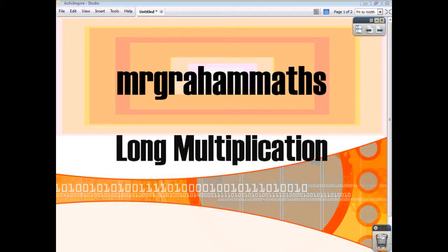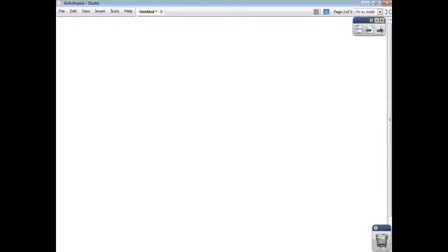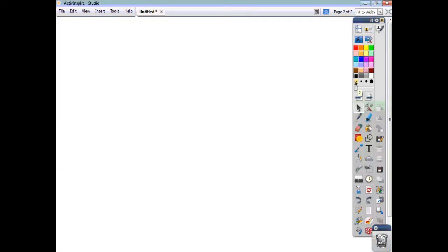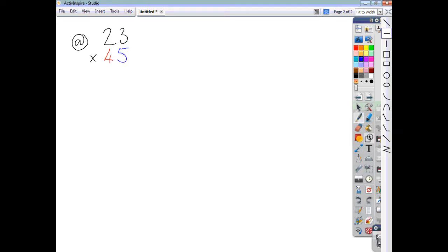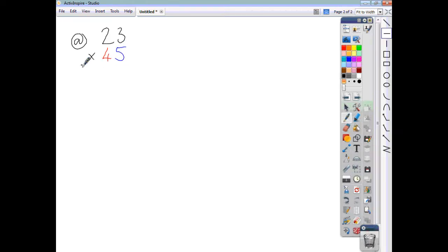In this video we're going to look at long multiplication. The easiest way to teach you how to do this is just to run you through a few examples. Let's say you're asked to multiply 23 by 45. I'm going to make use of different colours and you'll see why in a minute when we write 45. The first thing you're going to do is take the 23 and multiply it by 5.